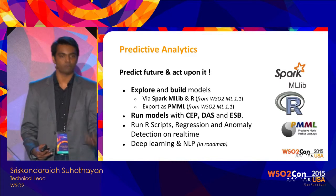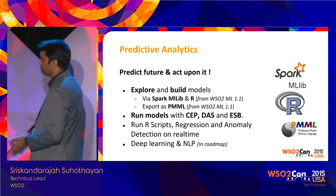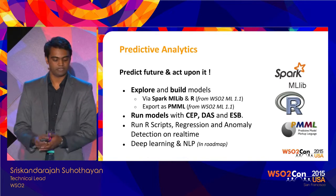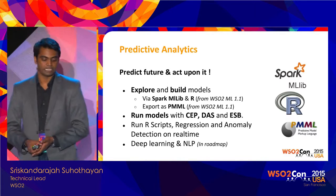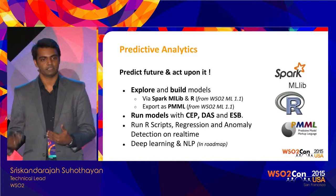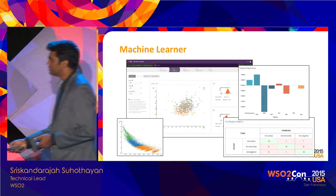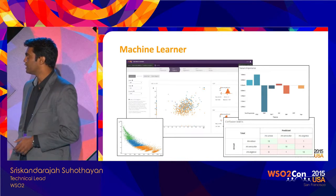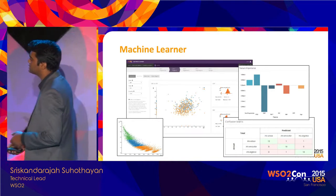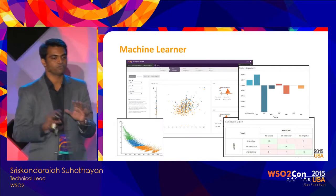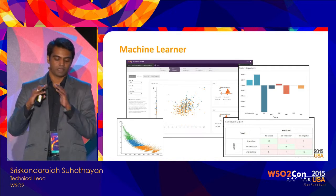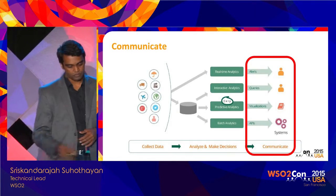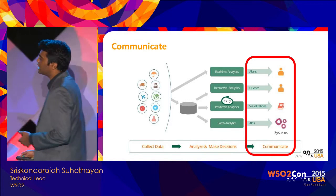The CEP runtime can run scripts and we have regression and anomaly detection models. The next release of the machine learner will also add deep learning and natural language processing support. For data exploration, it gives you different clustering solutions — sampled k-means and similar — and shows feature importance, confusion matrices, and ROC curves. It's a tool for data analysts to understand and analyze data and build models on top of it.